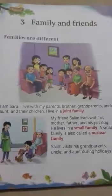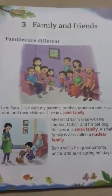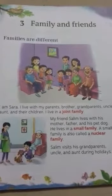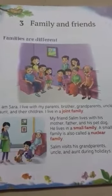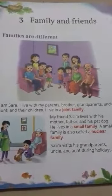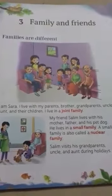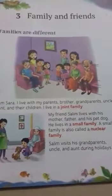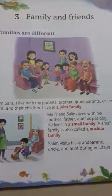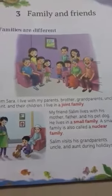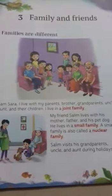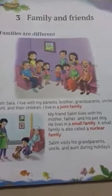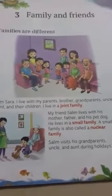In your book we have three types of families, and they are: joint family, small family, and single parent family. Now let us discuss every type of family. I know that you are quite familiar with every type of family from class 1. Now we are going to recap those families.